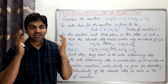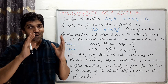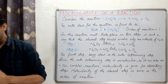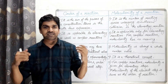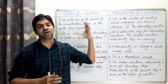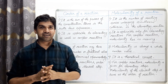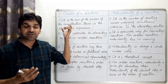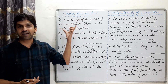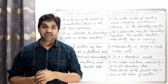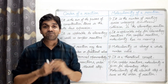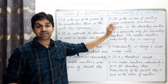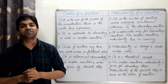Now we'll discuss in detail the differences between order of reaction and molecularity. The order of reaction is defined as the sum of the powers of the concentration terms in the rate law expression. The molecularity is the total number of reacting species that collide together simultaneously in the elementary reaction.